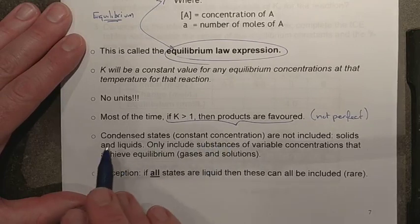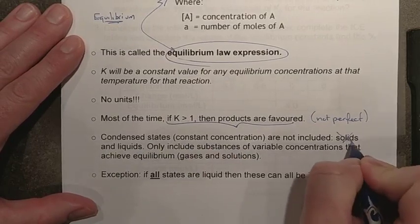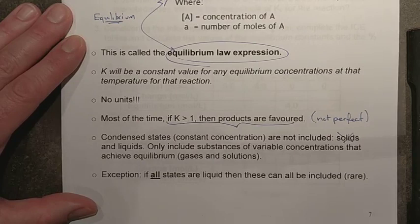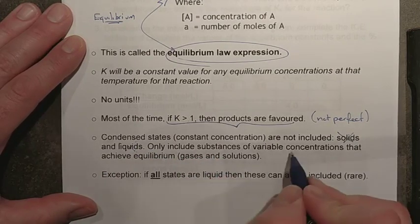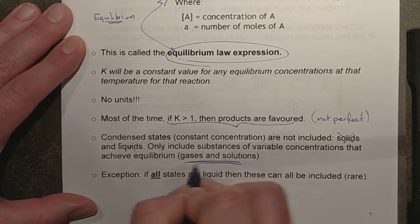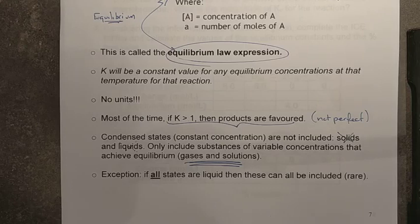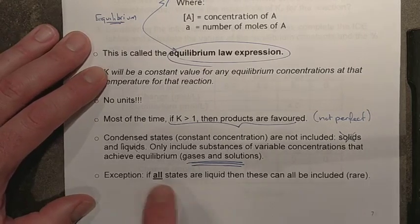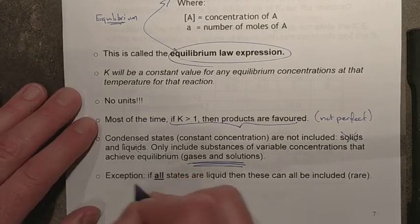Condensed states. So if you are a condensed state such as a solid, these are constant concentrations throughout, so they are not included in this. Liquids are very, very difficult to condense. That's the whole science behind hydraulics. So we really do not look at ones with liquids. So it's only things that have variable concentrations, which are our gases and our solutions, which are really the only things we've been looking at so far in this unit. There is one exception. You guys will not see it in at-home learning, but if all states were liquid, then we could do an equilibrium law expression. Don't worry about it. We're not going to do this to you.